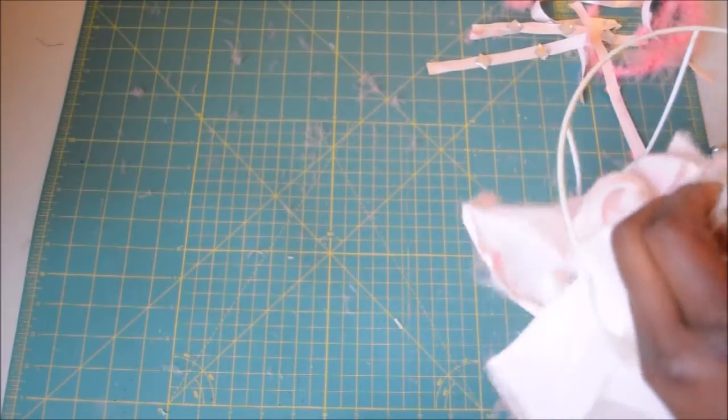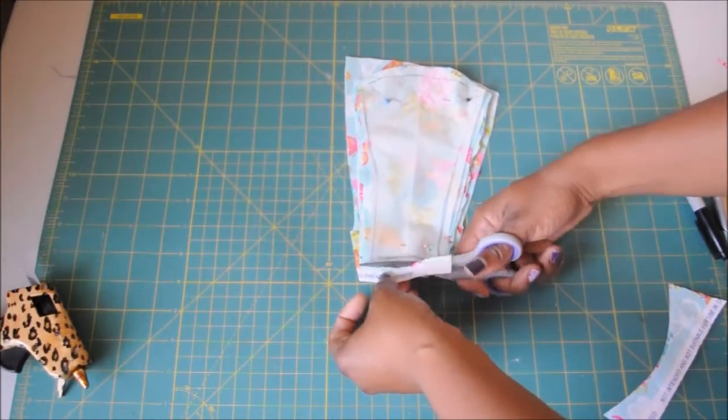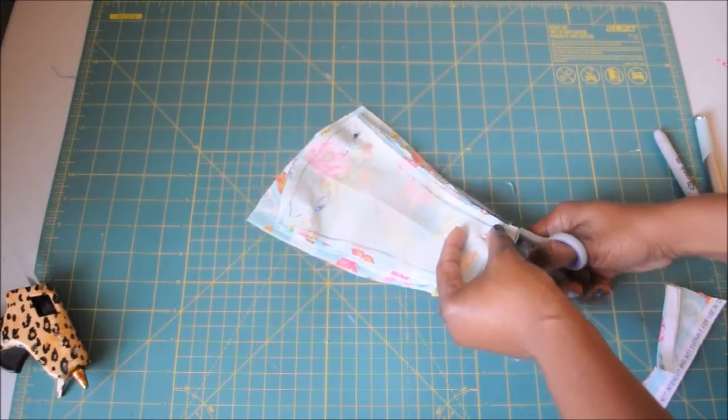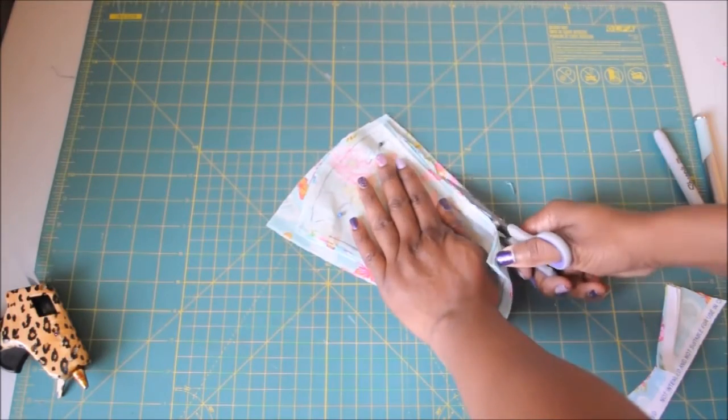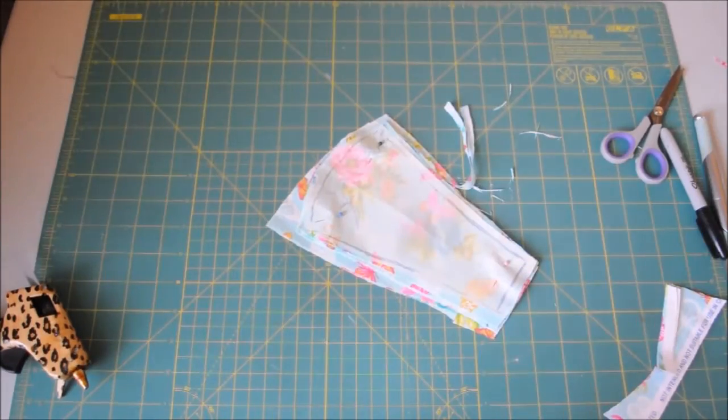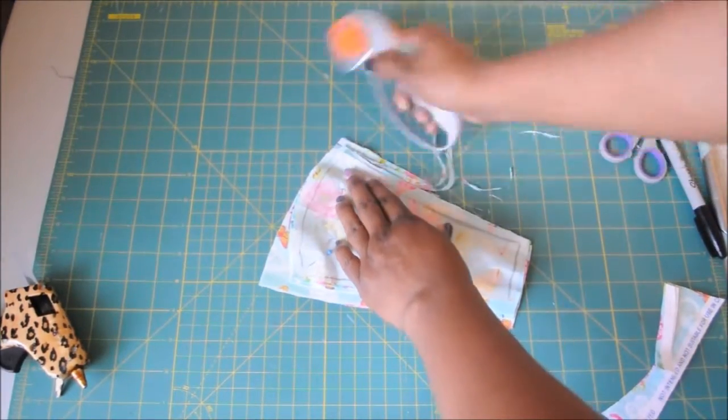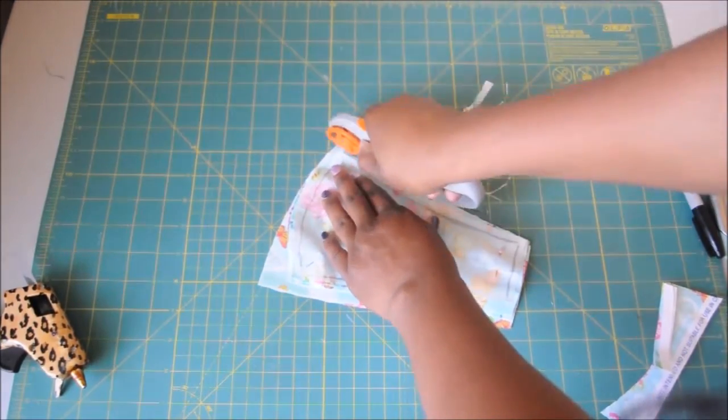I got this idea from another YouTuber and I'll leave a link to their video in the description box below. So using parchment paper I traced out a pattern or a stencil of each section of the lamp. And you'll see exactly what I'm talking about in a second. But then I cut out six panels, one panel for each section of the lamp.